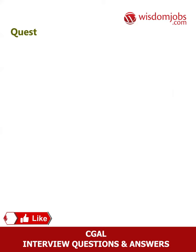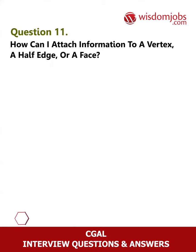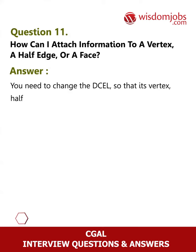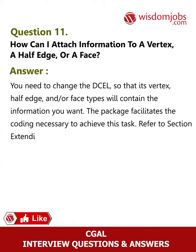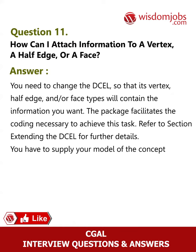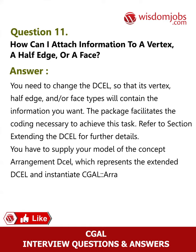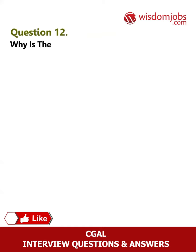Question 11: How can I attach information to a vertex, a half-edge, or a face? Answer: You need to change the DCEL so that its vertex, half-edge, and/or face types will contain the information you want. The package facilitates the coding necessary to achieve this; refer to the section 'Extending the DCEL' for further details. You have to supply your model of the concept Arrangement_DCEL and instantiate CGAL::Arrangement_on_surface_2 properly.